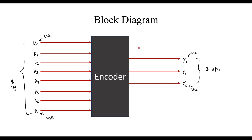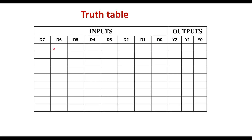Now let me write the truth table for the 8-to-3 line encoder. It has 8 inputs D0 through D7 and 3 outputs Y2, Y1, and Y0. When all inputs are 0 in an encoder, the output is not predictable — we call it a don't care. So this is an invalid state. In an encoder, any one of the inputs should always be 1.